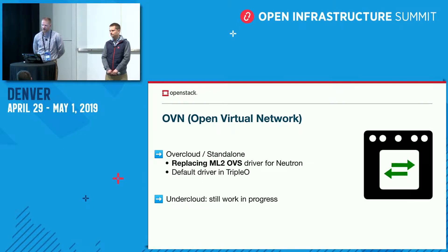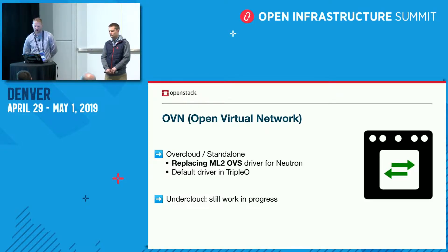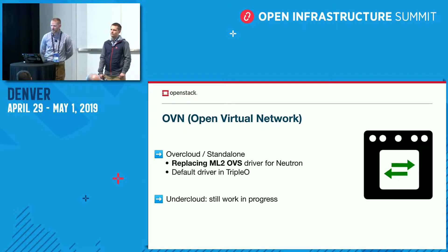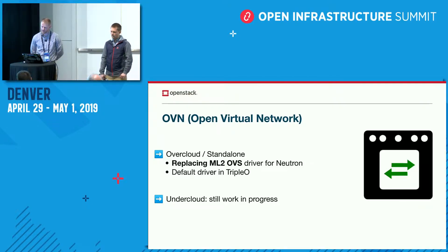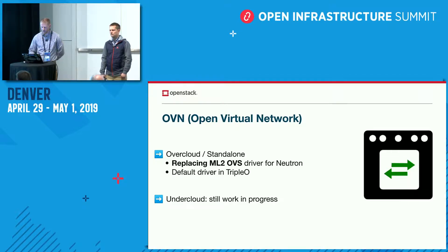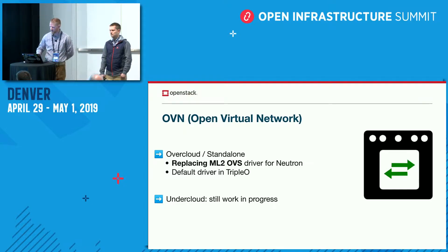The default network driver on the overcloud, which used to be ML2 OVS, is now replaced with OVN. OVN gives a little more scalability and does not rely on the Neutron L3 agents — it uses a distributed database model, so the compute nodes run OVN services instead of Neutron services. ML2 OVS will still be supported; changing the default is all that's changed here.